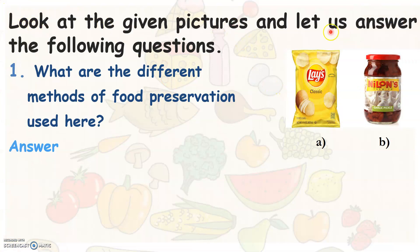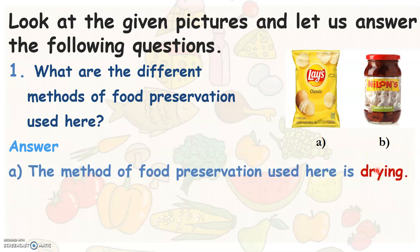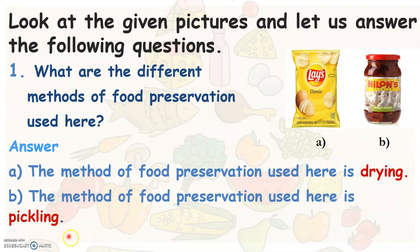Look at the picture and let us try to answer the following questions. What are the different methods of food preservation used here, in the case of A and B? A is a packet of chips that is sealed and B is a bottle of pickle. The method of food preservation used in A is drying, and in the case of B it is pickling.